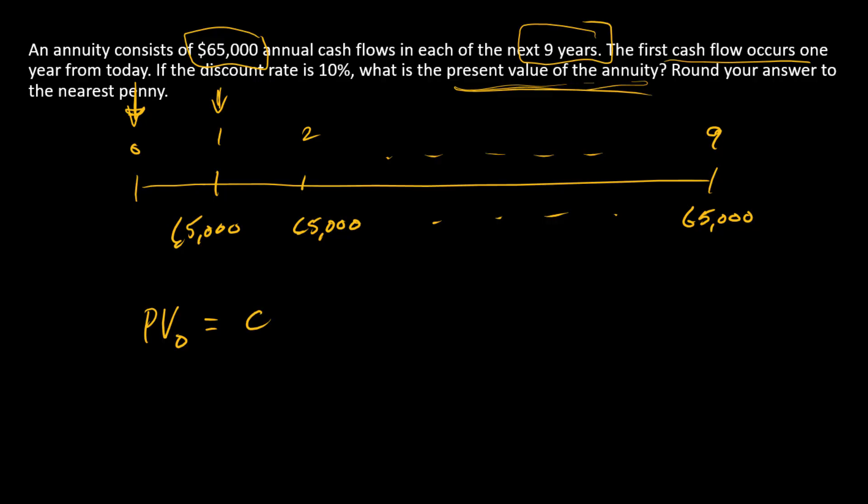And so the formula for the annuity that pays some amount C is just this right here, where C is the cash flow amount, r is the discount rate, and n is the number of periods, so in here would be 9.